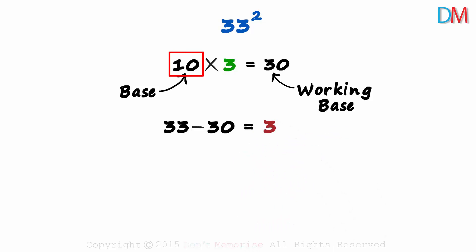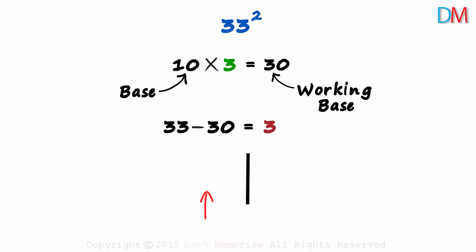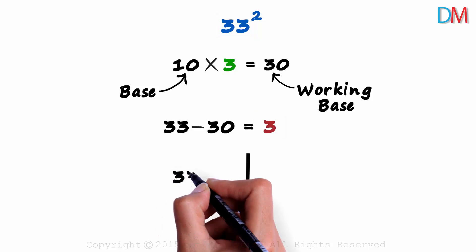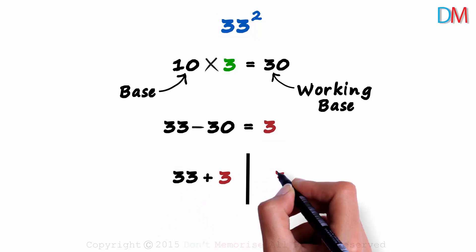Once we find the base, working base and the difference, we make a partition. On the left we write the sum of the number and this difference. That will be 33 plus 3. And on the right we square the difference: 3 squared.